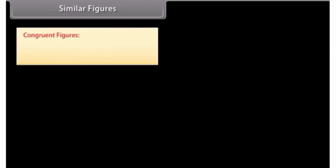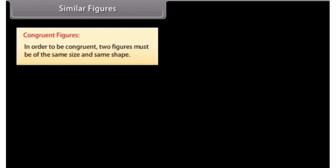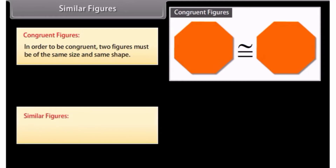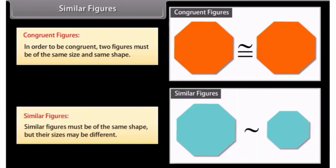Similar figures versus congruent figures. In order to be congruent, two figures must be of the same size and same shape. Similar figures must be of the same shape, but their sizes may be different.